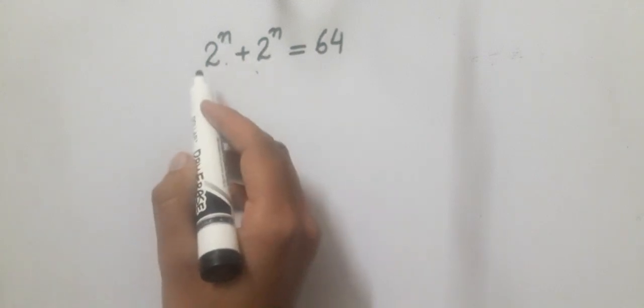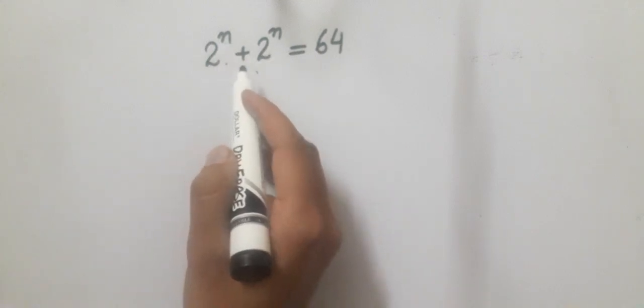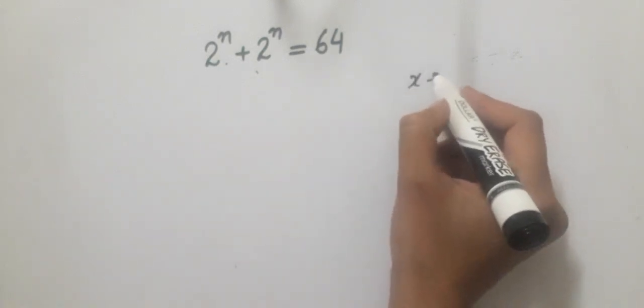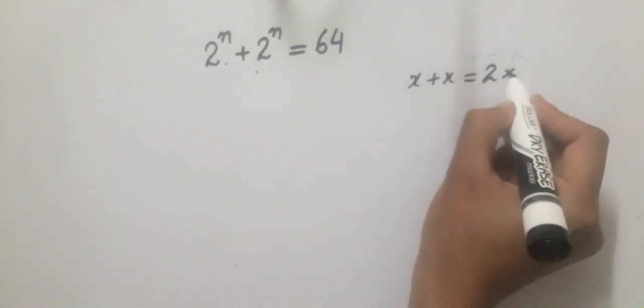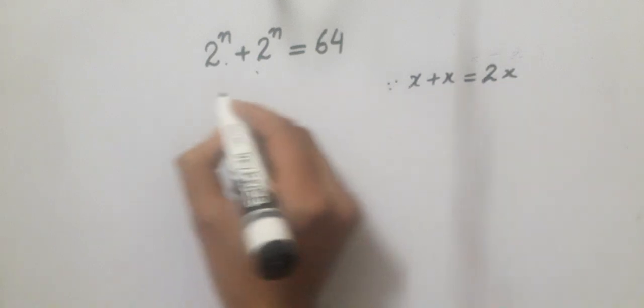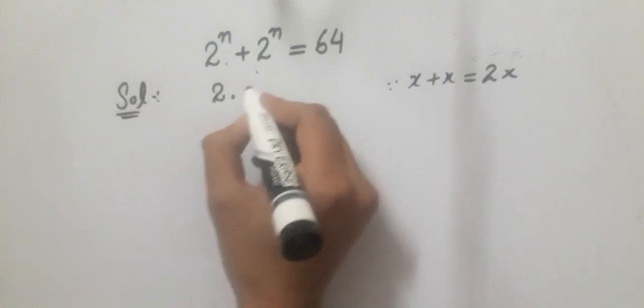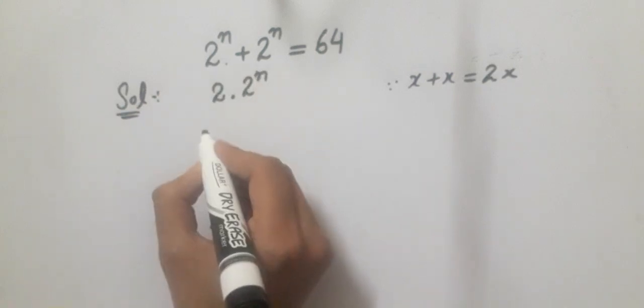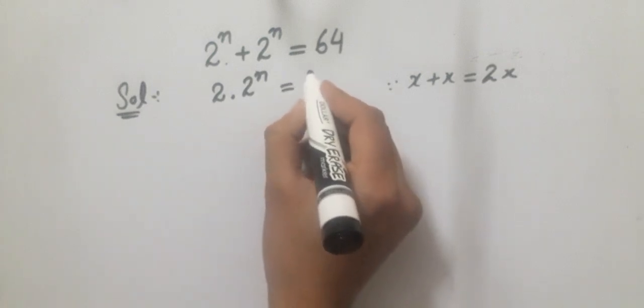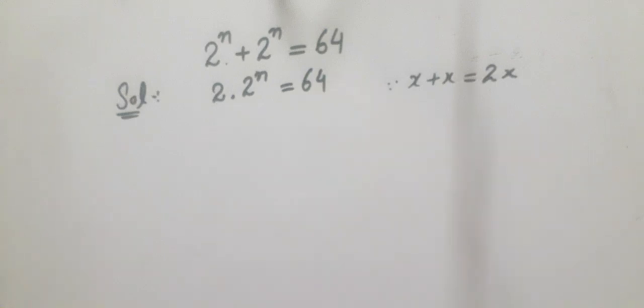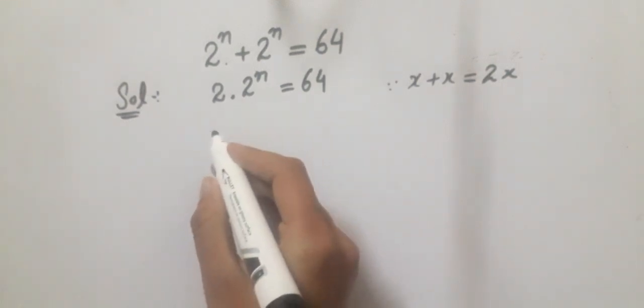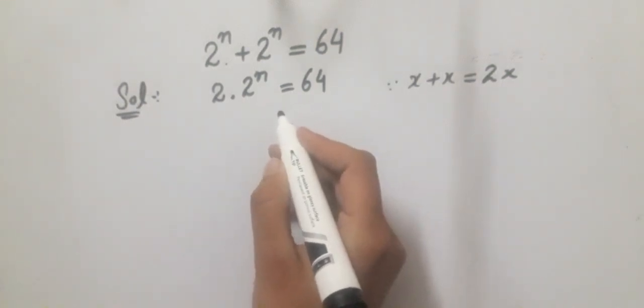Adding these together is like adding x plus x which is equal to 2x. So we will solve this as 2 into 2 raised to power n which is equal to 64. Now we will isolate 2 raised to power n by dividing both sides of the equation by 2.